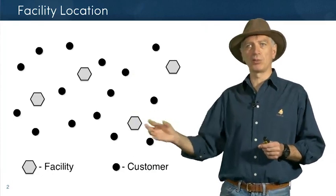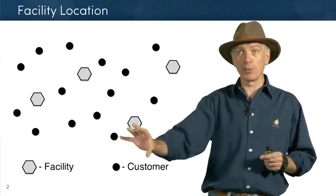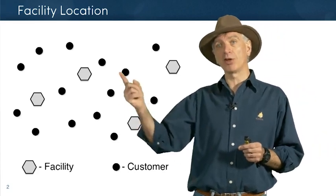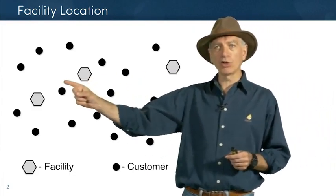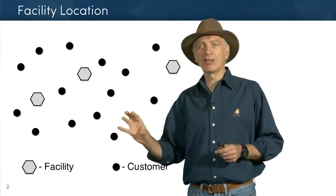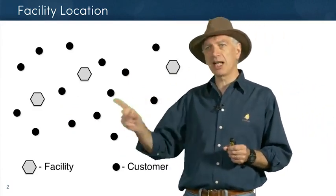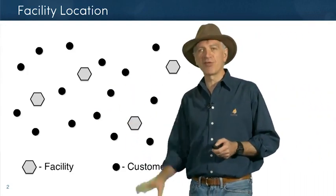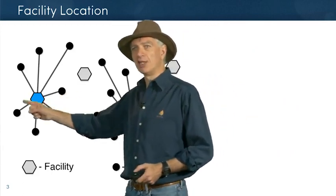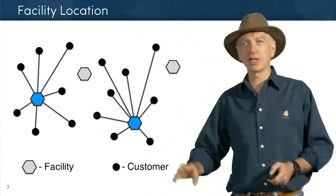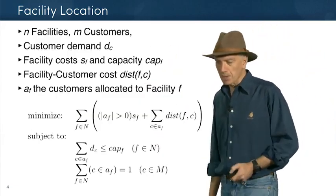That's a variable cost which depends on how far the customer is located. There is a tension between the fixed cost — if there were no fixed cost you would open many warehouses — and the variable cost of actually shipping goods to customers. Every facility also has a particular capacity telling you how many customers it can serve. As a solution example, we open two facilities and the customers are assigned to those two facilities.